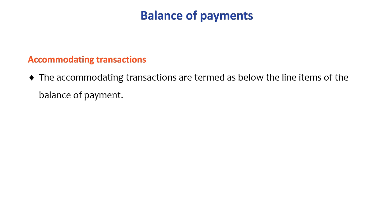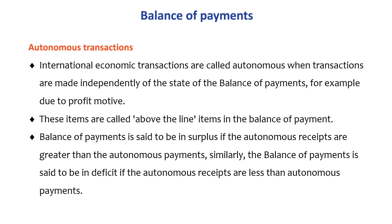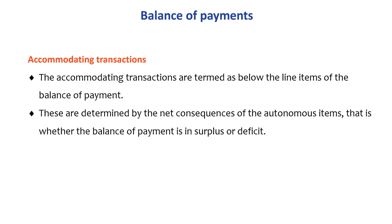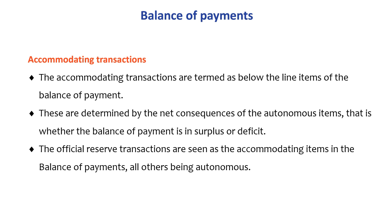Accommodating transactions are termed below-the-line items of the balance of payments. They are determined by the net consequences of the autonomous items — i.e., whether the balance of payments is in surplus or deficit. The official reserve transactions are seen as the accommodating items in the balance of payments; all others are treated as autonomous.